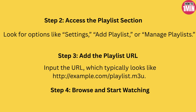Step two is to access the playlist section. Once the app is open, navigate to the playlist section. Look for options like Settings, Add Playlist, or Manage Playlist. Select the option to add a new playlist. This will prompt you to enter a playlist URL such as an M3U link, or login credentials for services like Xtream Codes.